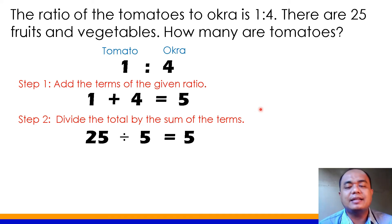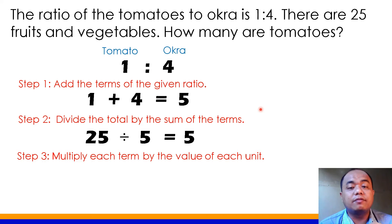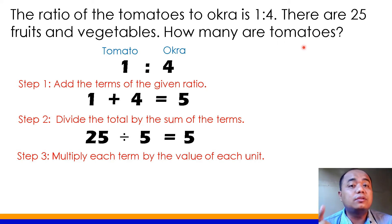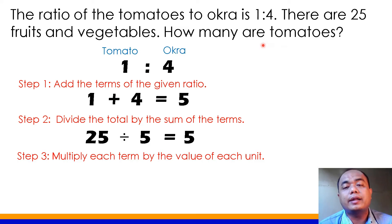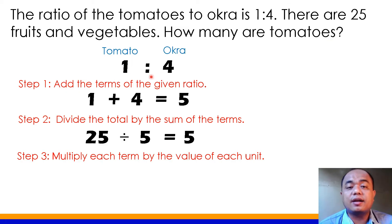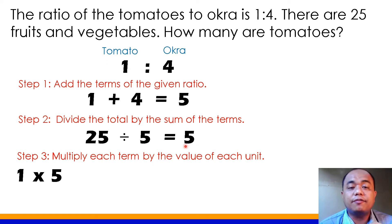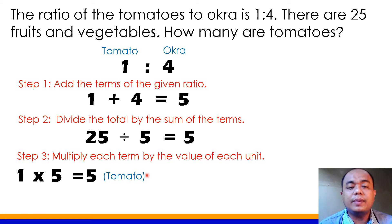Third and final step: multiply the term by the value of each unit. Since tomato lang ang hinahanap sa problem, you don't need to solve the two terms. Sa 1 at saka 4, ang bilang ng tomato ay yung 1. So, 1 times 5 equals 5. That refers to the number of tomatoes.